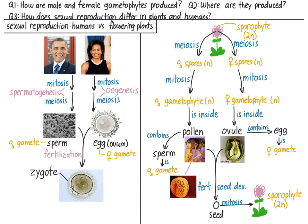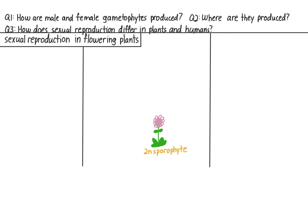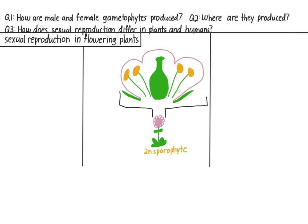We'll get to more differences and similarities between humans and plants later. Next, let's add more detail to our picture of plant reproduction. In order to see where production of the male and female gametophytes happens, let's go over some basic flower anatomy. Here's a sketch of a flower. Going from the outside inwards, we have the sepals, the petals, the stamens, and in the middle of the flower, the carpel.